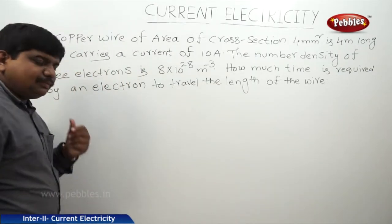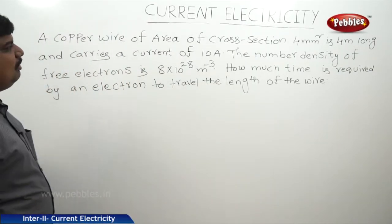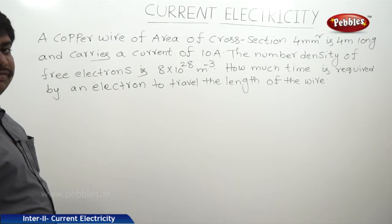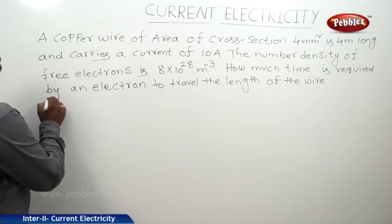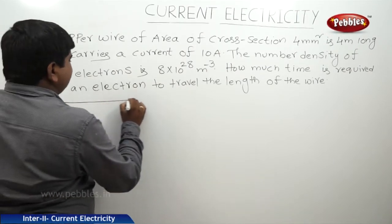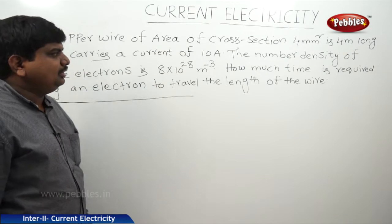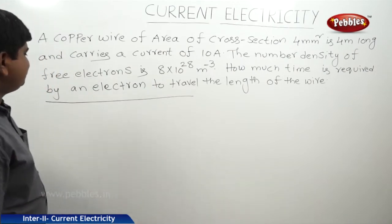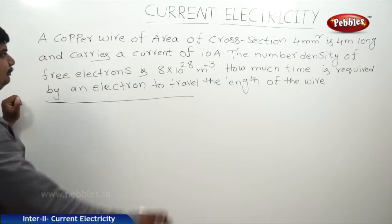The next problem is also based on relaxation time. A copper wire of area of cross-section 4 millimeter square is 4 meters long and carries a current of 10 amperes. The number density of free electrons is 8 into 10 to the power of 28 per meter cube. How much time is required by an electron to travel the length of the wire?